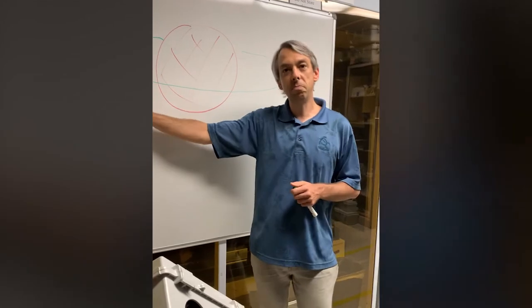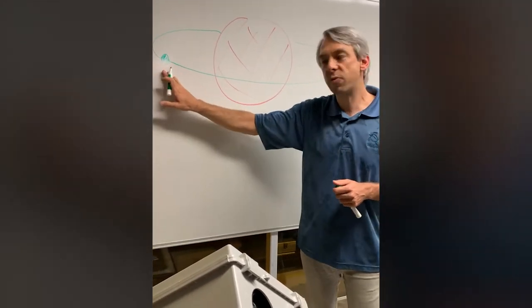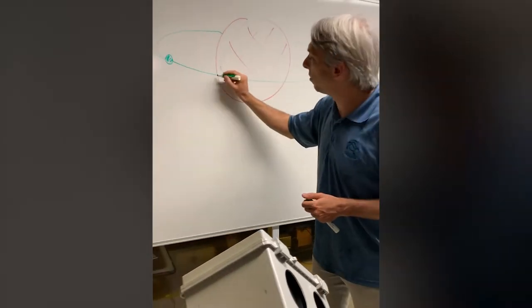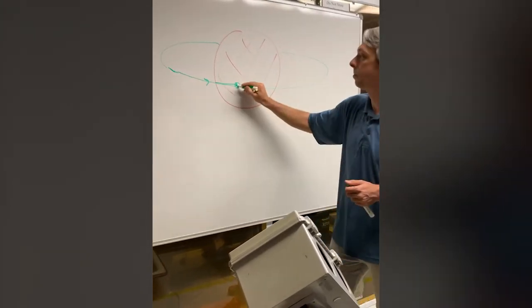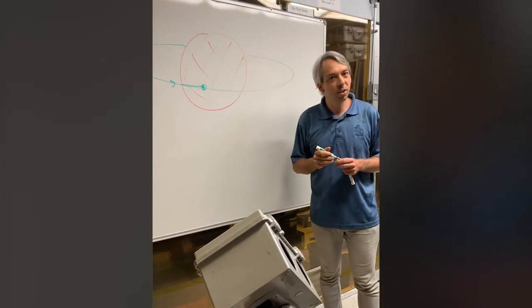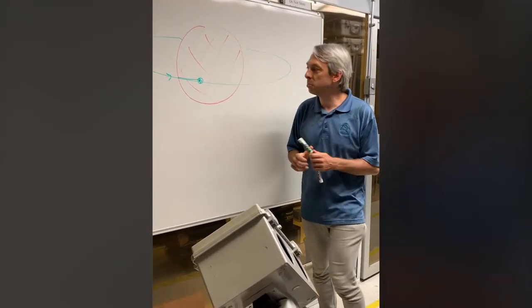So when the planet is here you don't really see it. It's so much fainter than the star. However, as the planet is moving in front of the star, let's say it's here, it'll block a little bit of the light of the star. The star will look a little bit fainter.